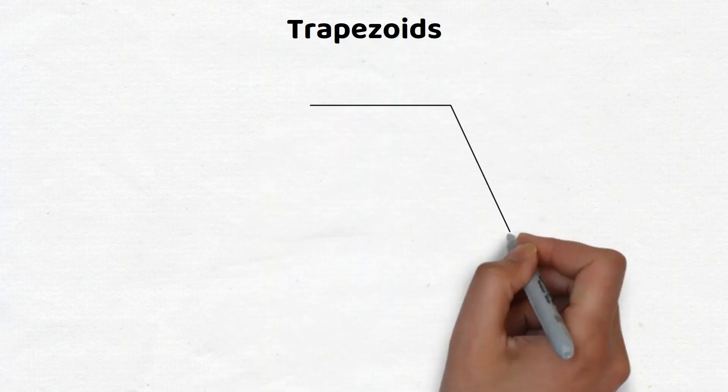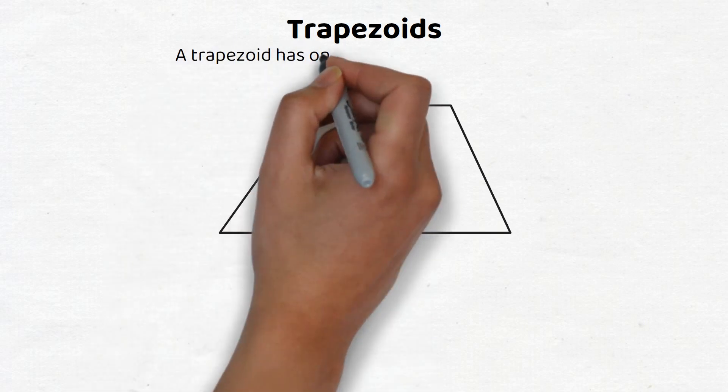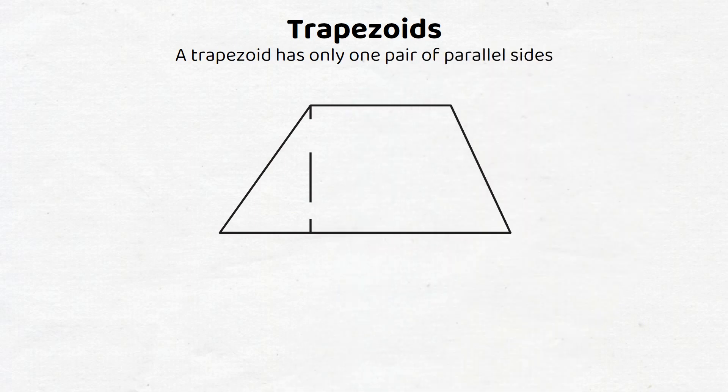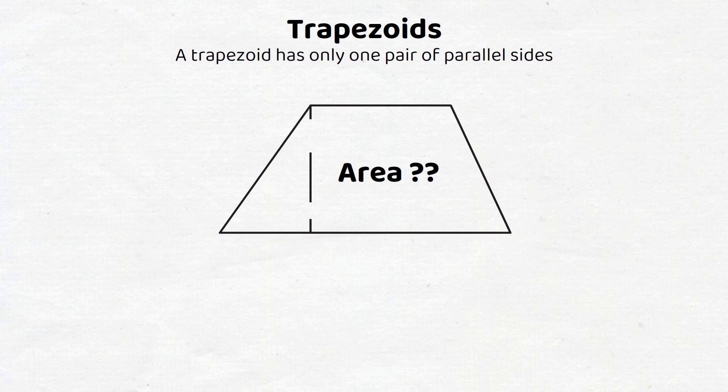Trapezoids. A trapezoid is a quadrilateral with a pair of parallel sides. Note a parallelogram has two pairs of parallel sides, but a trapezoid has only one pair. Note just as with parallelograms and triangles, the height of a trapezoid is the length of the common perpendicular to its pair of parallel sides.